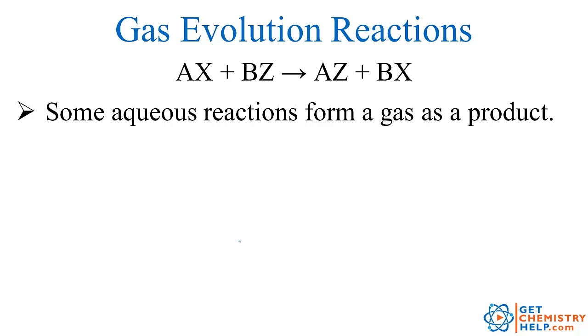Now as we saw, double displacement reactions have this general format where you have two ionic compounds and they're just swapping out anions to create new partnerships. Well we saw in that lesson how to use solubility rules to predict if a product would be soluble or aqueous, or insoluble which means solid.